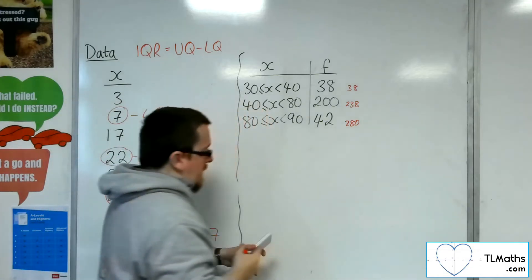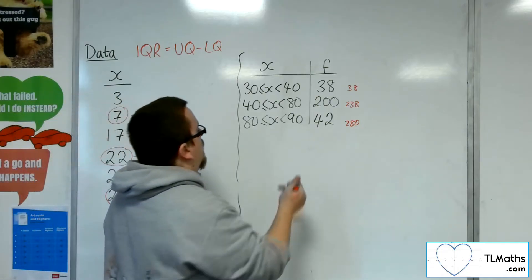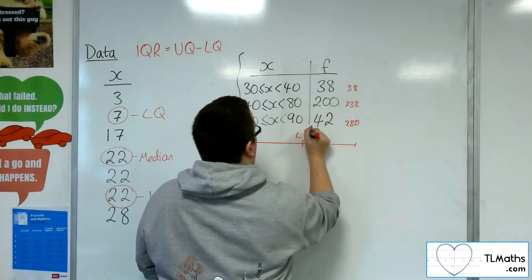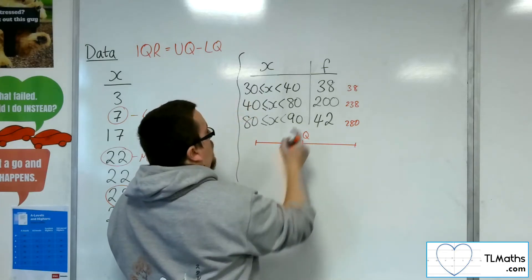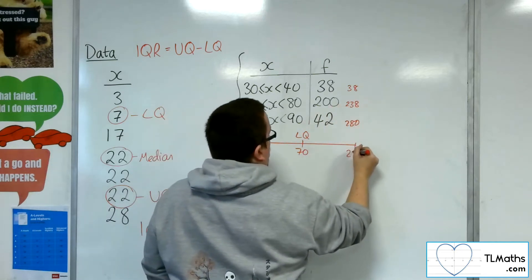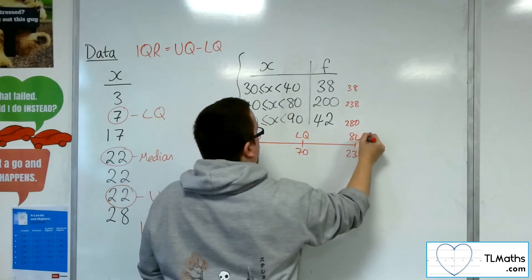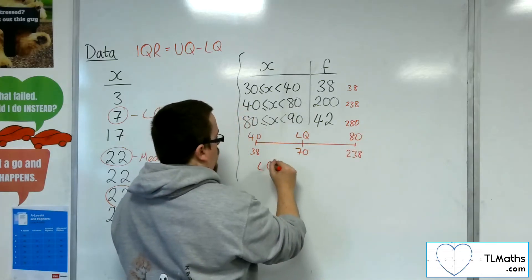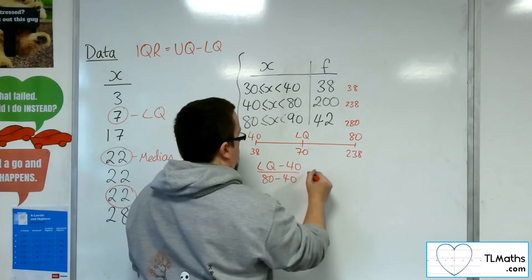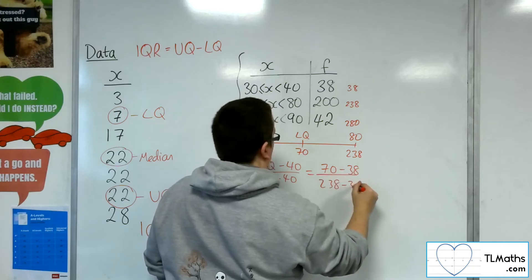So 280, and then you divide that by 4, so a quarter of the way in gets us to 70. So the lower quartile will be at the 70th position. So we've gone through 38 bits of data there, and then to get to 238 bits of data by the end of the group. So it's between 40 and 80. So the lower quartile, take away 40, over 80, take away 40, is 70, take away 38, over 238, take away 38.